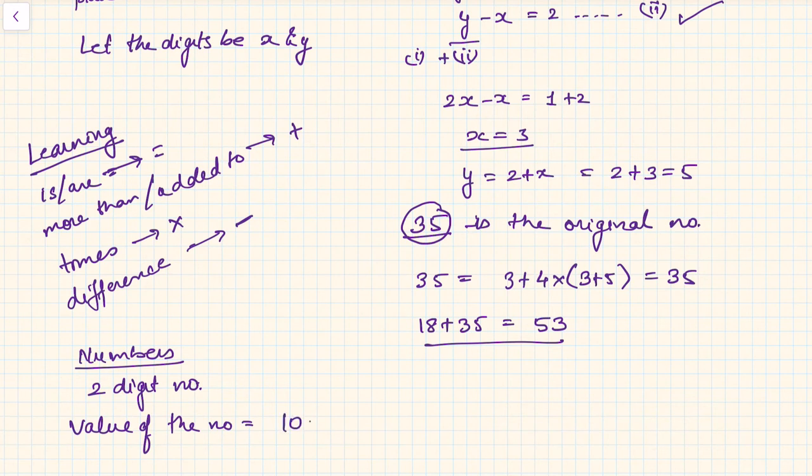10 times tens place digit plus units place digit. This is how a number in the decimal system is represented. Hope you understood the process. Thank you.